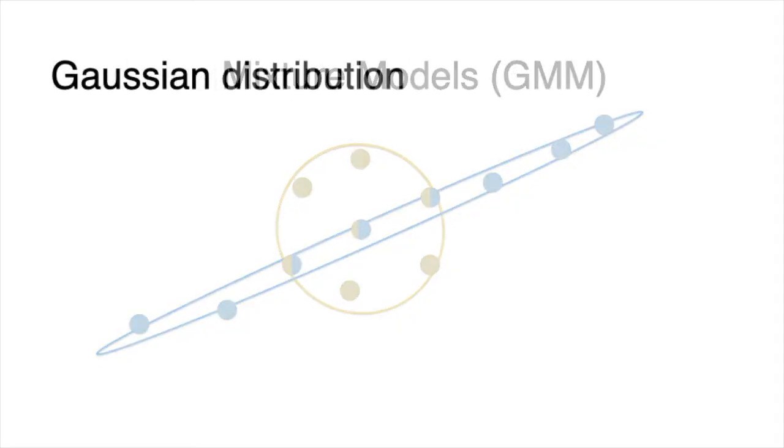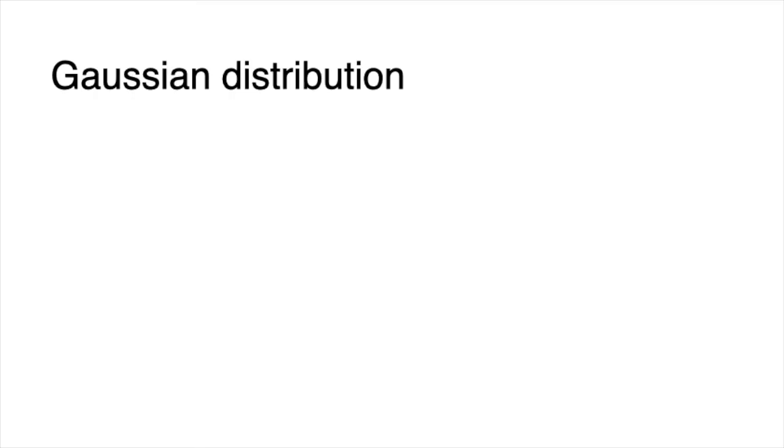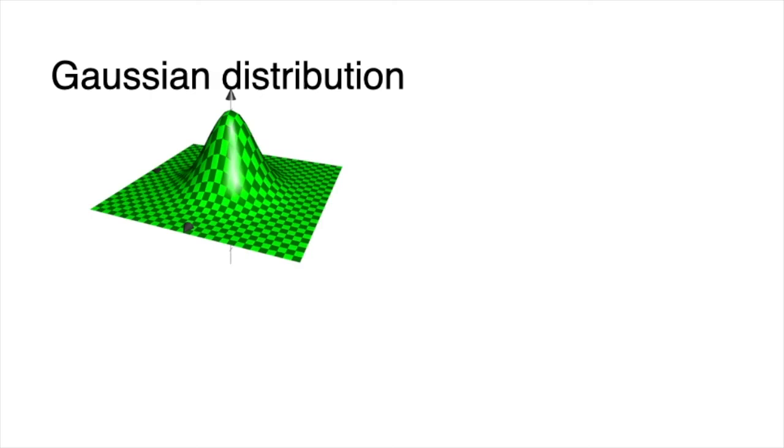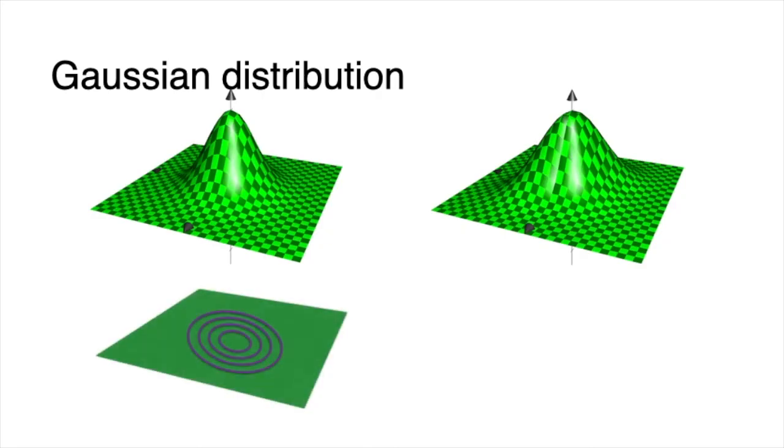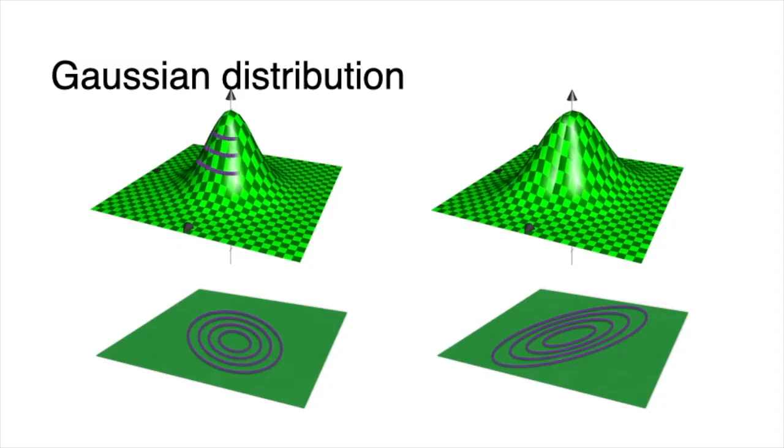And why is it called Gaussian mixture model? Well, because it is based on the Gaussian or normal distribution. This one over here is a Gaussian distribution in two variables, and this one is another one. They both look like bumps underneath a really large blanket. But since we're drawing everything in the plane, we will draw them in the following way, from the top. So what we'll do is we draw the shadow. These purple curves here are the levels of the bump.